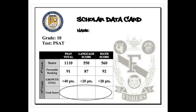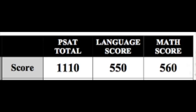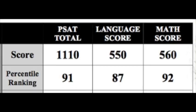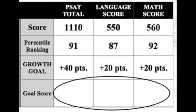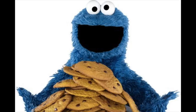Juniors, it shows your score from last year's PSAT plus the percentile ranking — how you rank nationally based on that score — plus your goal for this year. If you reach your goal by beating your last year's score by 40 points, you receive free dessert.